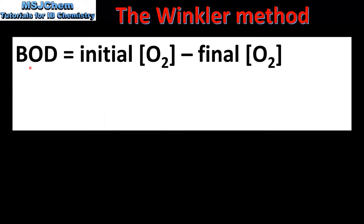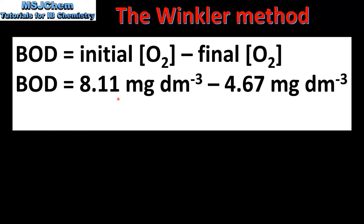The final step is to calculate the BOD of the river water sample. To do this, we subtract the final concentration of dissolved oxygen after 5 days from the initial concentration of dissolved oxygen. The initial concentration was 8.11 mg per dm³, and the concentration after 5 days was 4.67 mg per dm³.